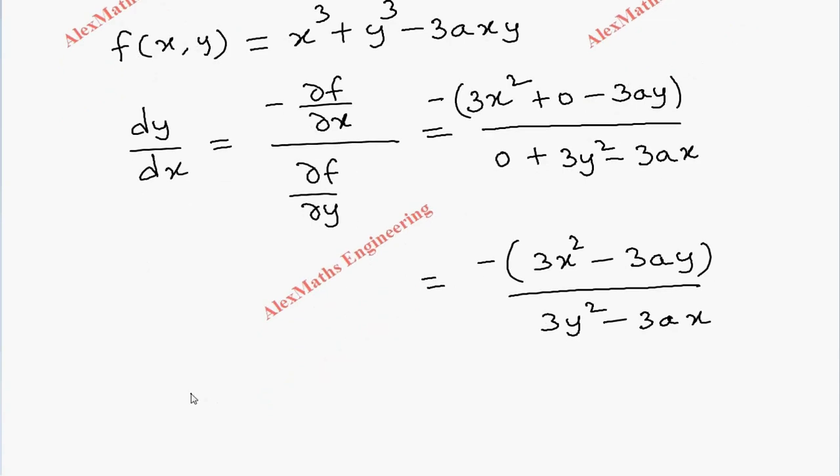We can take 3 common in the numerator. So dy by dx is nothing but minus 3 open bracket x square minus ay then whole divided by, taking 3 common in the denominator, we get y square minus ax.